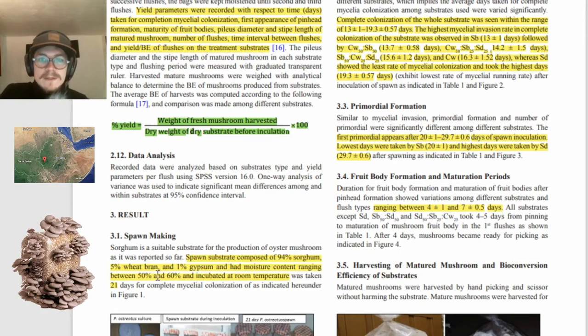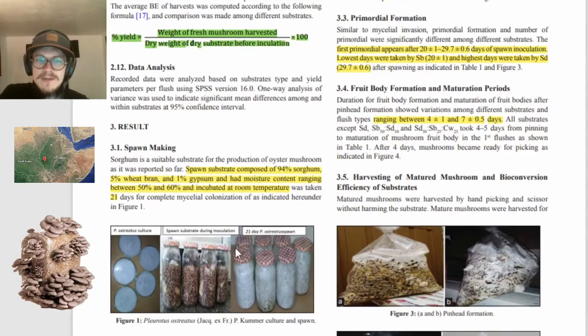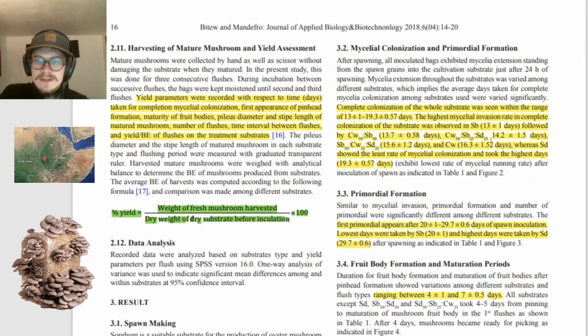Then we have the spawn making, spawn substrate composed of all of that. You know, the five percent, the one percent, the moisture content range between fifty and sixty percent. Incubated at room temperature, twenty-one days for complete mycelial colonization. I think it's complete mycelial colonization of everything.